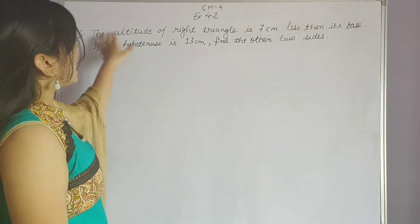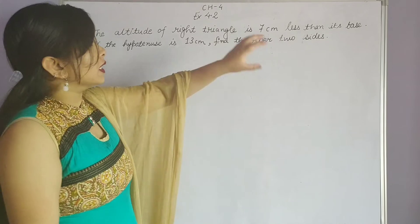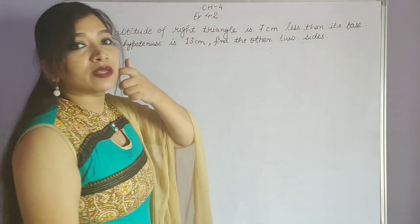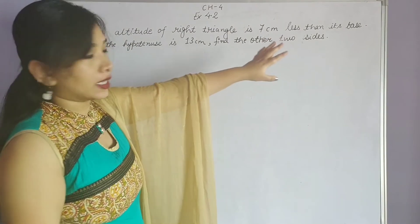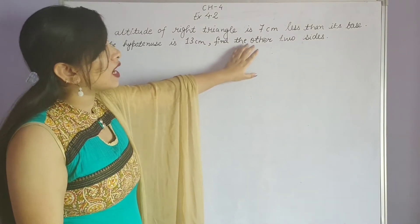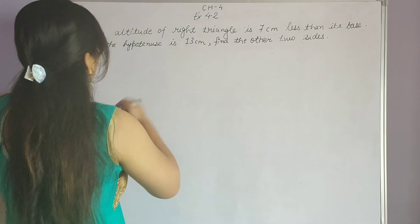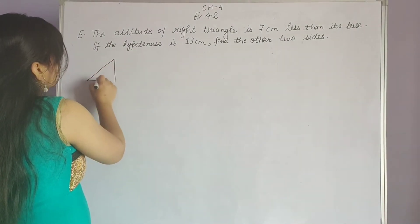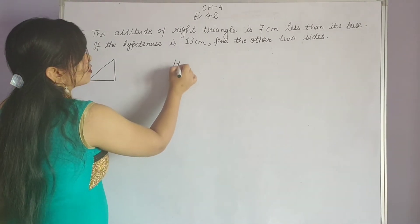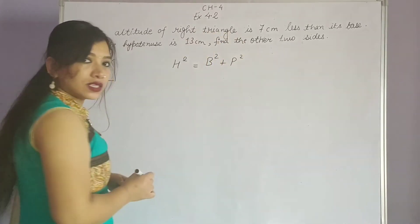Question number 5 of this exercise: the altitude of the right triangle is 7cm less than its base. The hypotenuse given is 13cm. You should know that in the right angle triangle, the Pythagoras theorem is applicable — hypotenuse square is equal to base square plus perpendicular square.